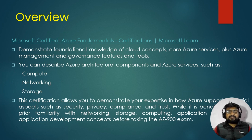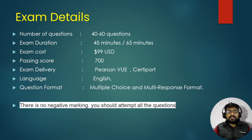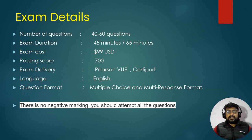For exam details: 40 to 60 questions are asked, the duration is 45 minutes, the exam cost is 99 USD, and the passing score is 700. You can schedule the exam using Pearson VUE. The language is English and the format is multiple choice and multiple response. Importantly, there is no negative marking, so you can attempt all questions.